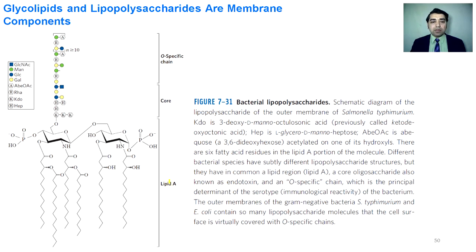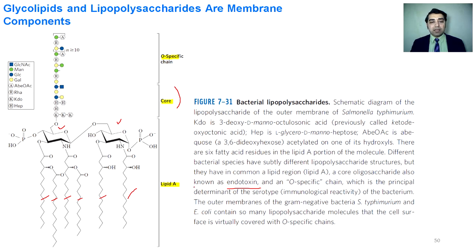In the structure of lipopolysaccharides, there is lipid A, a core, and an O-specific chain. Lipid A contains six fatty acids joined with two glucosamine molecules, and one of the glucose molecules is attached with the core portion, which is called the endotoxin. The O-specific chain consists of oligosaccharides that are the determinant of the serotype.